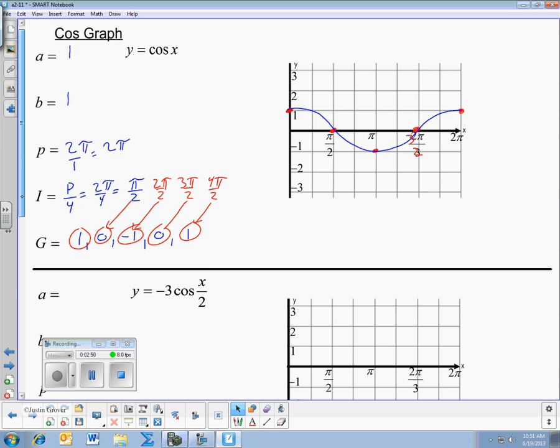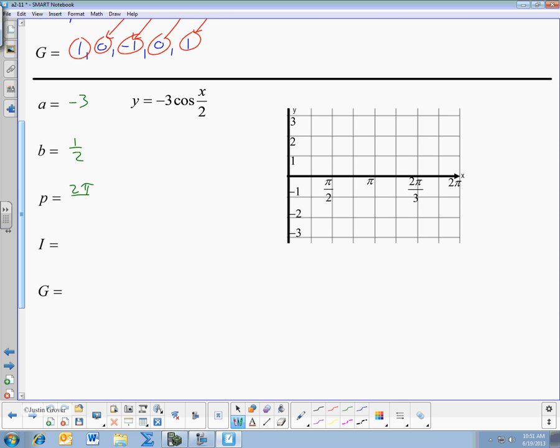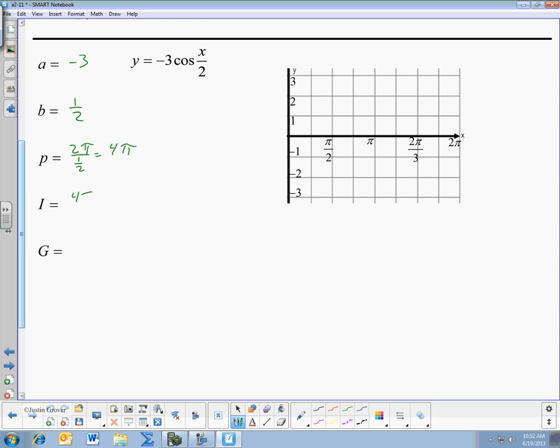So, the second example I have here for us, A is negative 3. Now, remember, A kind of stands for amplitude. Our amplitude would be positive 3, but A itself is negative 3. And B, coefficient of x, x over 2 is really a coefficient of 1 half. Your period, 2 pi over 1 half equals 4 pi. And your interval, 4 pi over 4 is just simply pi. And our guide starts off as 1, 0, negative 1, 0, and 1.